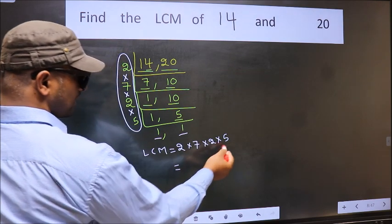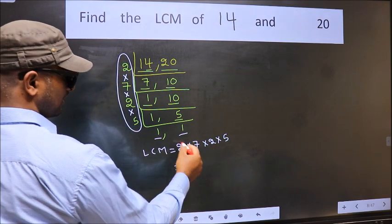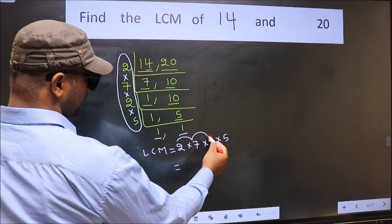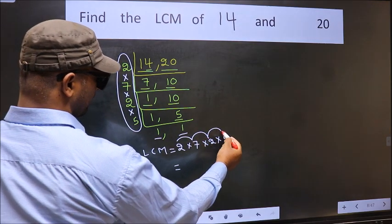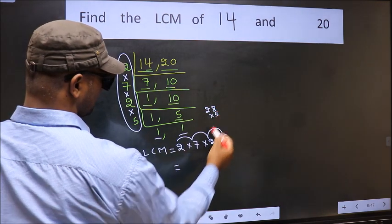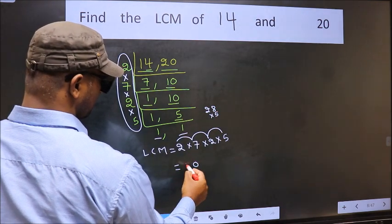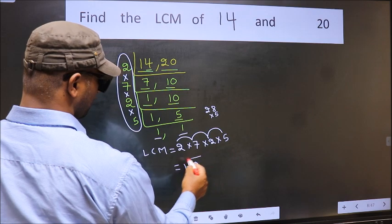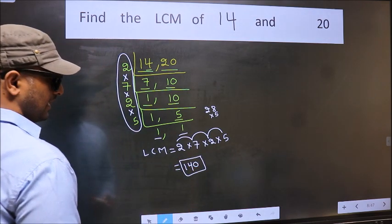So let us multiply these numbers. 2 into 7, 14. Into 2, 28. Into 5. 5 8s, 40. 0, 4. 5 2s, 10. Plus 4, 14. So 140 is our LCM.